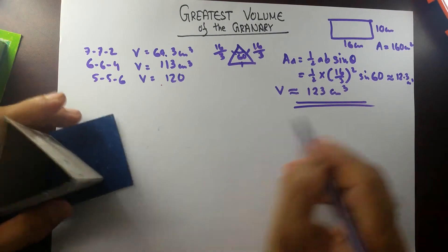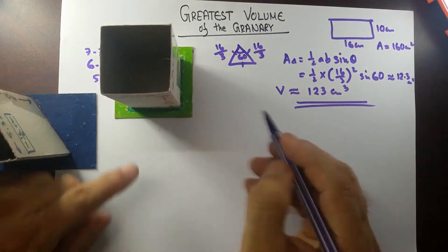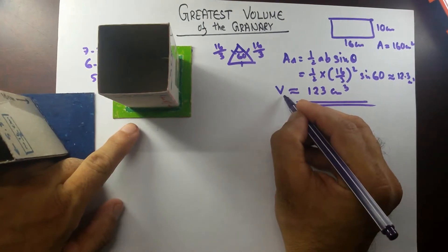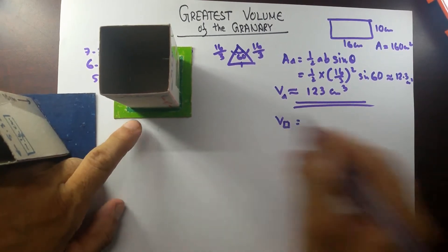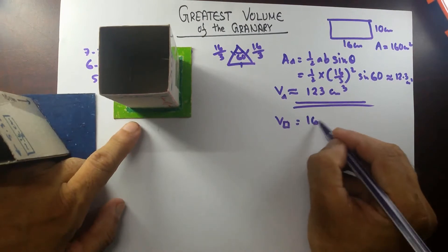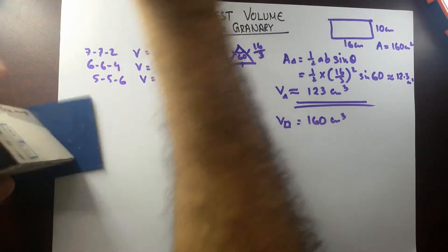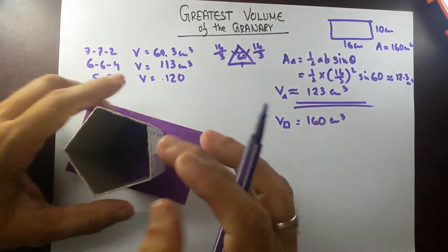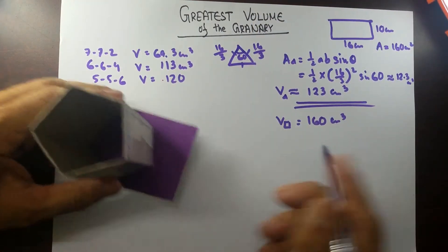So this equilateral triangular prism gives us 123 cubic cm, and in the last video we calculated that if you have a square base prism, the volume is 160 cubic cm. But if you take this prism to be a regular pentagon, let's calculate that next.